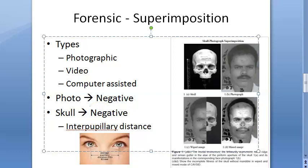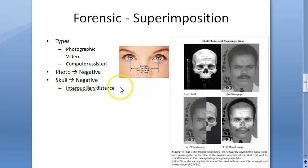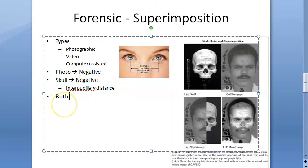The two superimposed negatives are then photographed together on bromide paper. Both negatives are placed together and photographed on bromide paper to produce the final superimposed image.